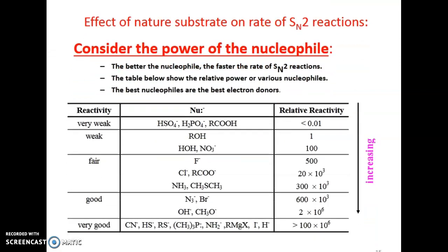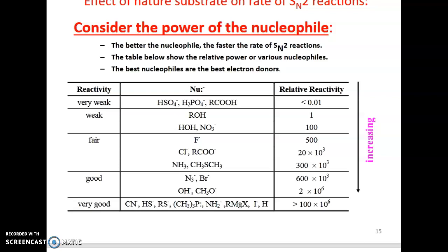In SN2 reactions, consider the power of the nucleophile. The better the nucleophile, the faster the rate of SN2 reaction. The best nucleophiles are the best electron donors. Relative reactivity ranges from very weak (HSO₄⁻, H₂PO₄⁻, ROH, H₂O, NO₃⁻) to weak (F⁻, Cl⁻, RCOO⁻, NH₃) to good and very good nucleophiles.